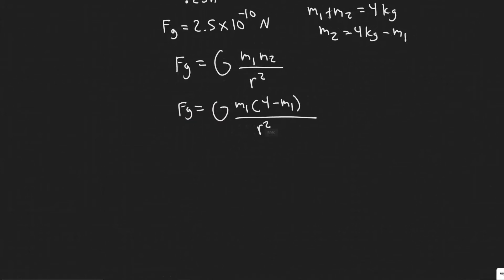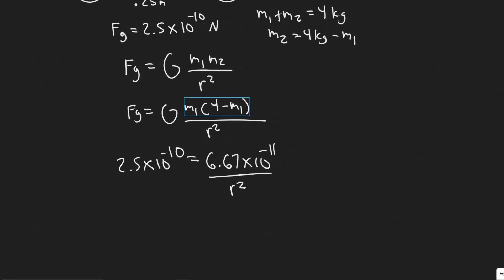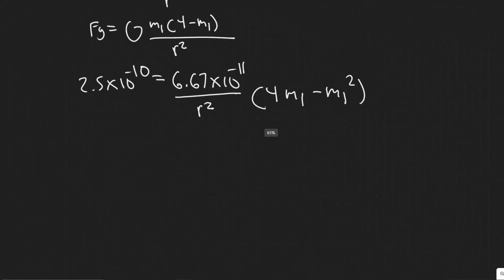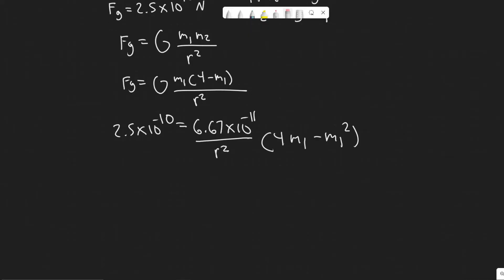So as I said before F_g is 2.5 times 10 to the minus 10 is equal to G. And so G is the gravitational constant which is equal to 6.67 times 10 to the minus 11. Then you're multiplying it by this. So let me go ahead and do that. So I'm going to move this r squared out front.